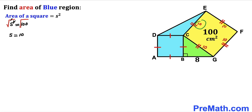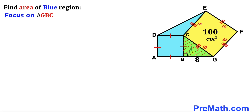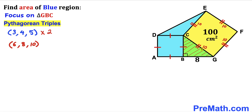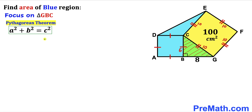All side lengths of the yellow square are 10 centimeter. Now let's focus on green triangle GBC, whose known side lengths are 8 and 10, with the third side unknown. Recalling the Pythagorean triplets 3-4-5, multiplying by 2 gives 6-8-10. Since we already have 8 and 10, side length BC is 6 centimeter. We could also have used the Pythagorean theorem to confirm this.